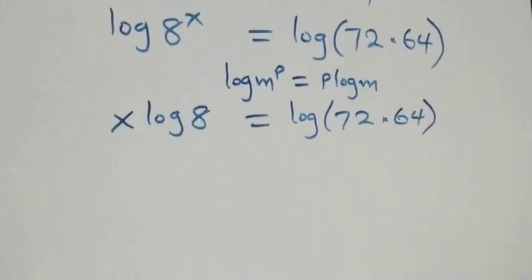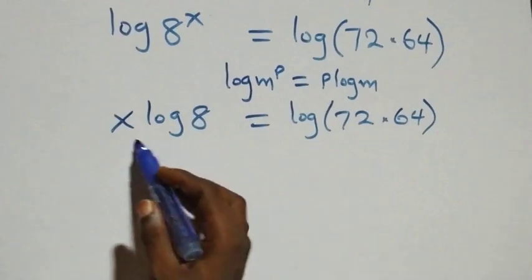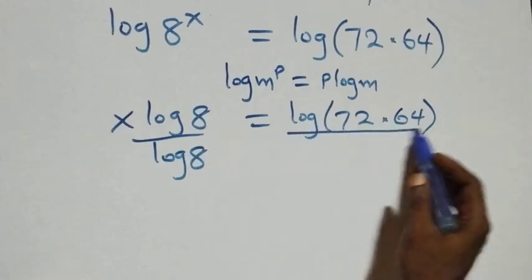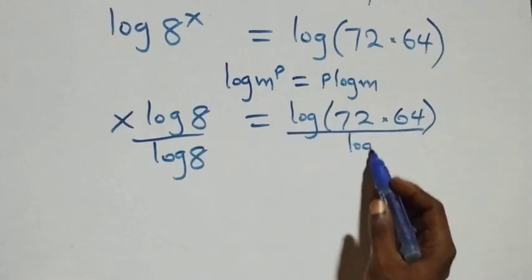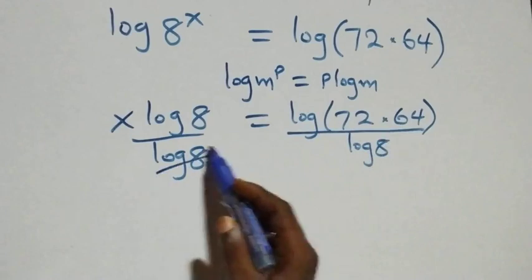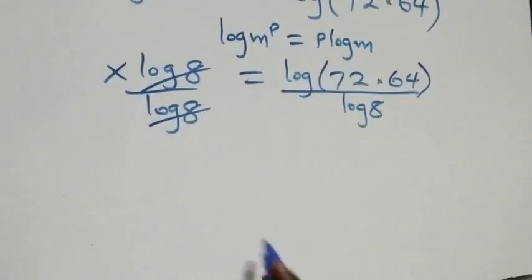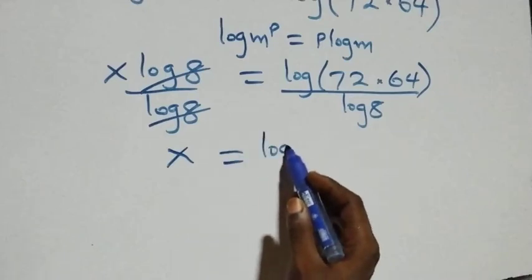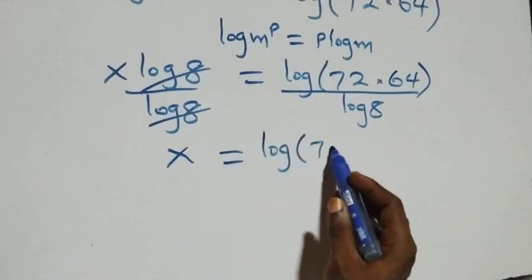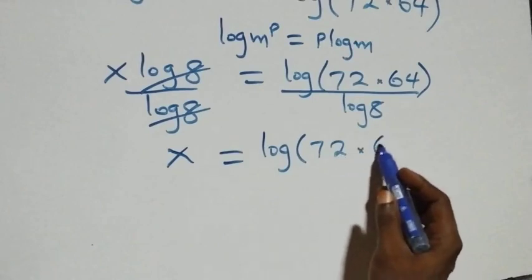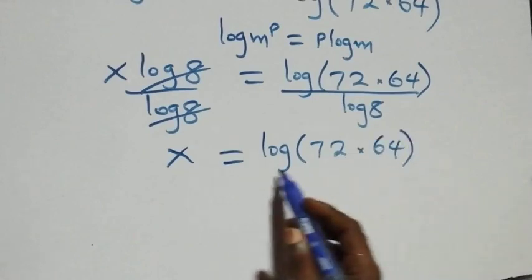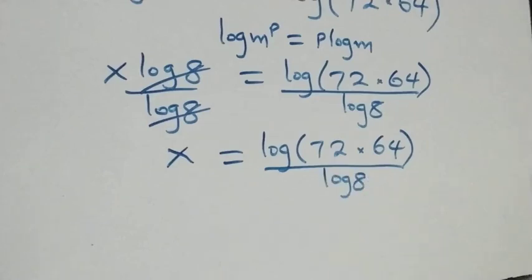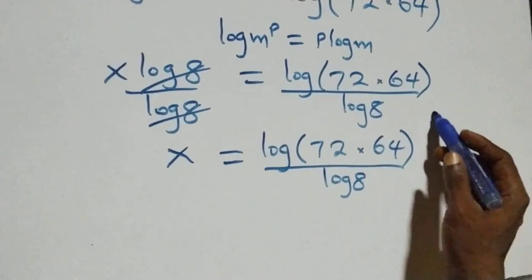The next step, we divide both sides by log 8. The log 8 terms cancel each other, and we have x left, which equals log(72 times 64) over log 8.